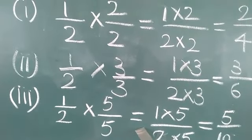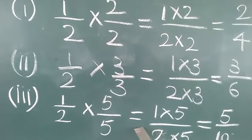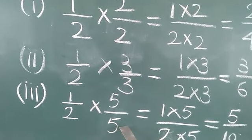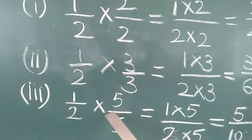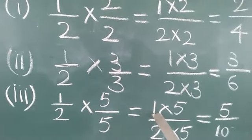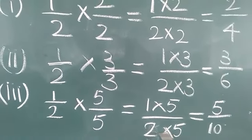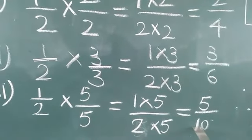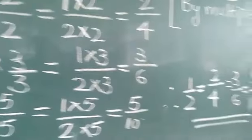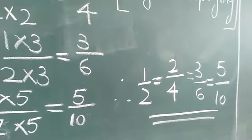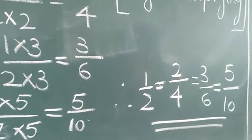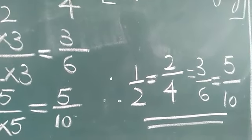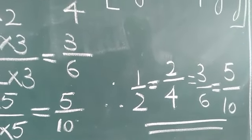The question is to write 3 equivalent fractions, so one more we have to calculate. We multiply by 5 by 5. So 1 by 2 into 5 by 5 equals 1 into 5 by 2 into 5, which is 5 by 10. So the equivalent fractions of 1 by 2 are: 2 by 4, 3 by 6, and 5 by 10.